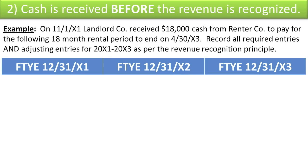The best way to learn how to deal with deferred revenue is to simply do an example. On November 1st, X1, Landlord Co. received $18,000 cash from Renter Co. to pay for the following 18-month rental period to end on April 30th, X3. Record all required entries and adjusting entries for 20X1 to 20X3 as per the Revenue Recognition Principle.